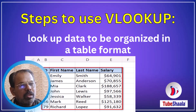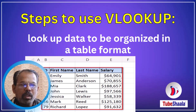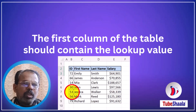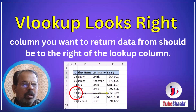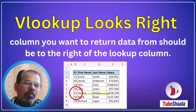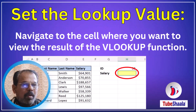Now let us understand the steps to use the VLOOKUP function. The first and foremost condition for VLOOKUP to be applied is that the lookup data must be organized in a tabular format, as shown in the figure. The first column of the table should contain the lookup value — in this case, employee ID number 53. It is also important to remember that VLOOKUP looks towards the right side of the lookup value, meaning the column you want to return data from should be to the right of the lookup column.